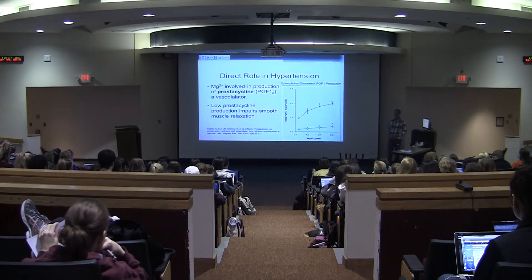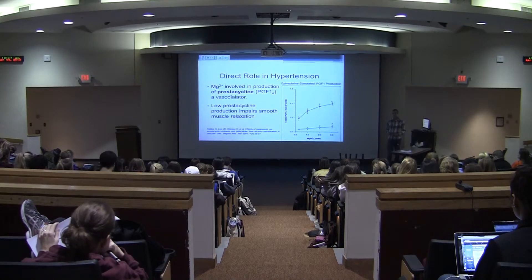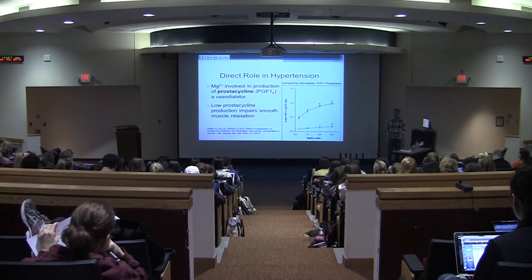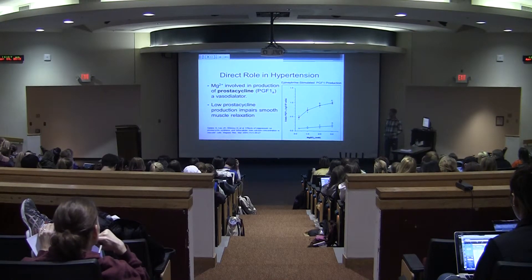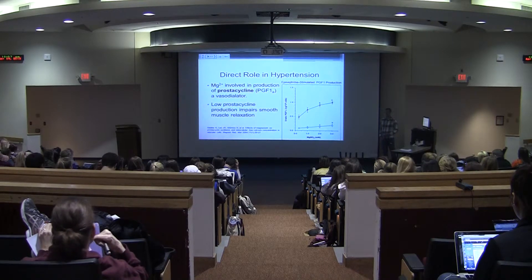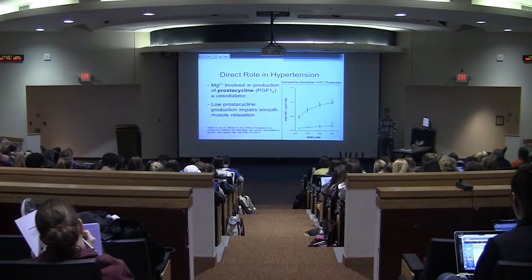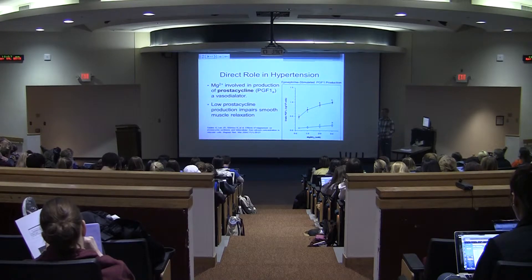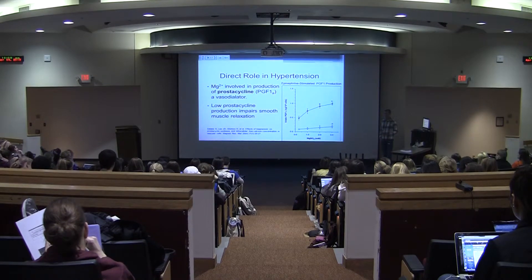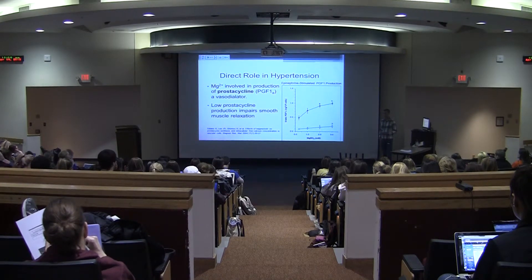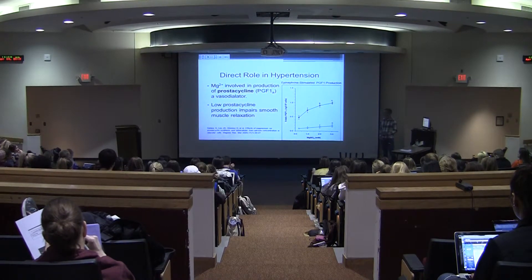In areas where you have impaired magnesium status or hypomagnesemia, you'll have impaired production of these vasodilators — prostacyclin and nitric oxide. Combined with the indirect effect of low magnesium on vasoconstriction, you'll overall have more constriction and a hypertensive result.